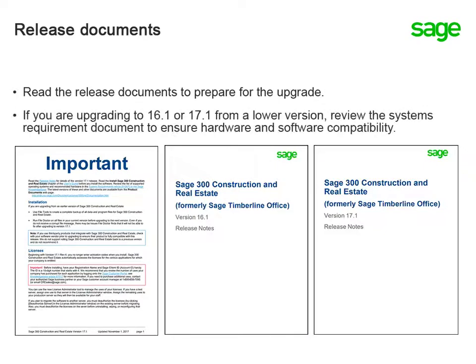If you're currently on a version lower than 16.1 or 17.1, make sure you review the system requirements before upgrading to ensure that you meet the recommended specifications. The release documents are available through the year-end software notice and in the Sage Knowledge Base.